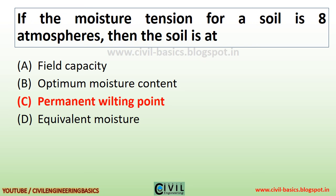If the moisture tension for a soil is 8 atm, then the soil is at the permanent wilting point.